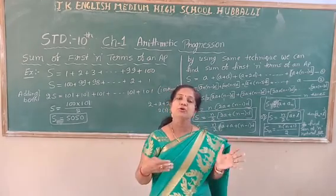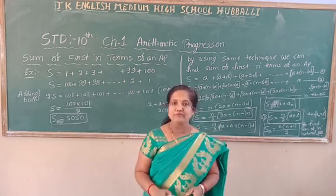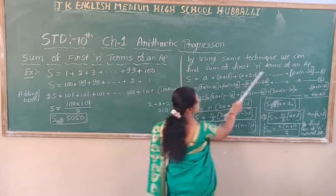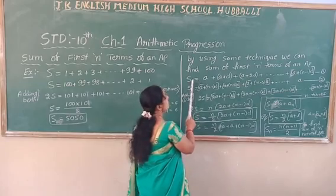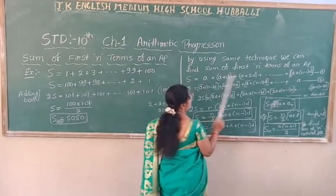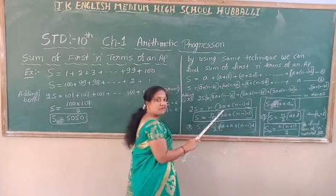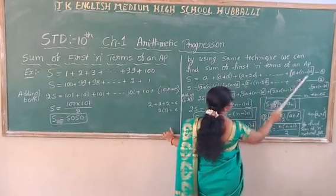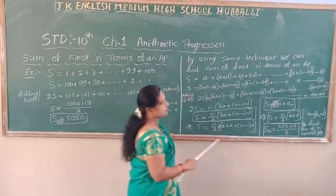The same method has to be used to derive the formula for the sum of n terms of an AP. We write: S equals the first term a, plus a plus d, plus a plus 2d, and so on, up to a plus n minus 1 into d. We call this equation number 1.